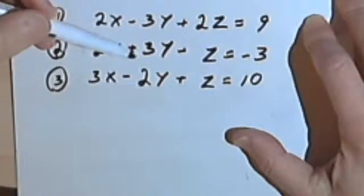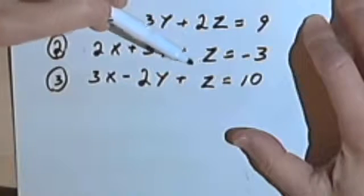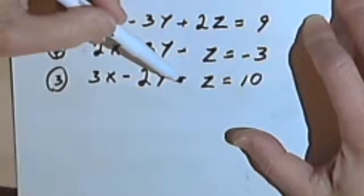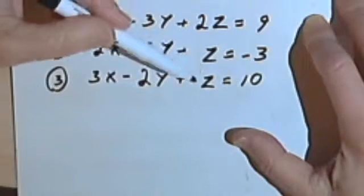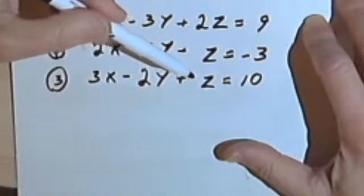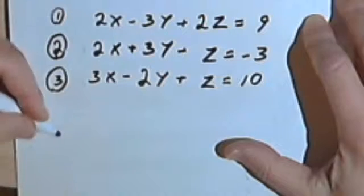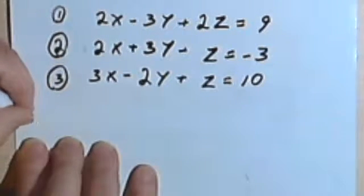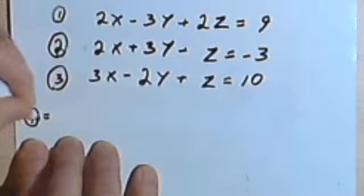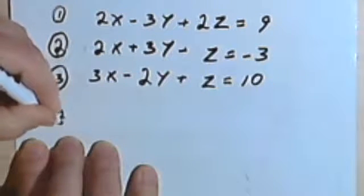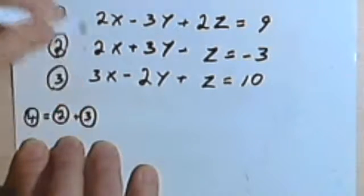Looking at these, I realize I've got the second equation with a negative z and the third equation with a positive z. So if I added those two equations together, the z's would cancel, and I'd just have x's and y's. So let's do that. I'm going to call that equation number 4, and equation number 4 is going to be number 2 plus number 3.